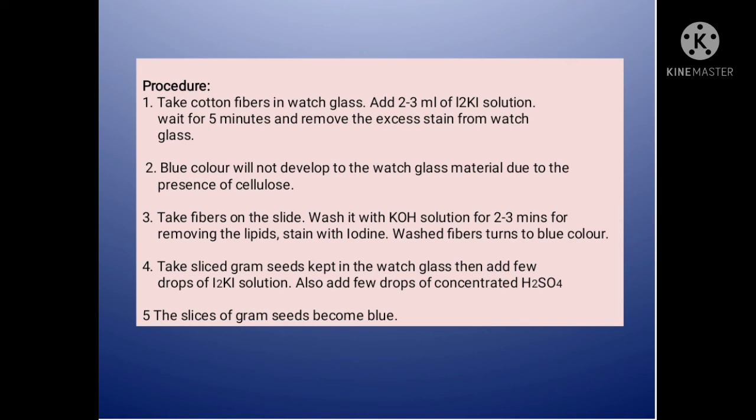For removing the lipids, stain with iodine. The fibers turn to blue color. Take sliced gram seeds kept in a watch glass, then add a few drops of I2K solution. Also add a few drops of concentrated H2SO4. The slices of gram seeds become blue, indicating the presence of cellulose.